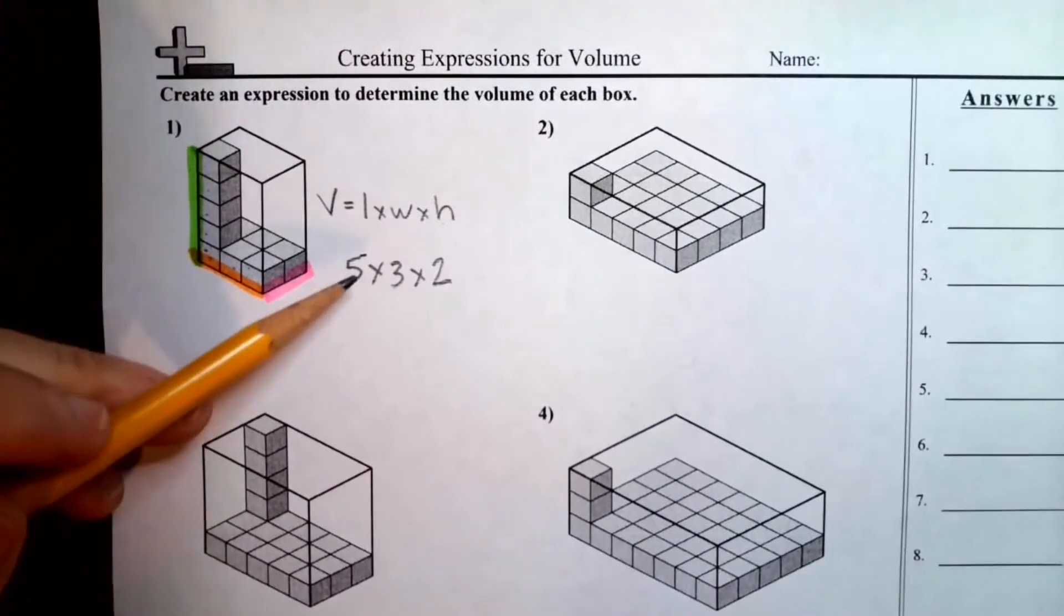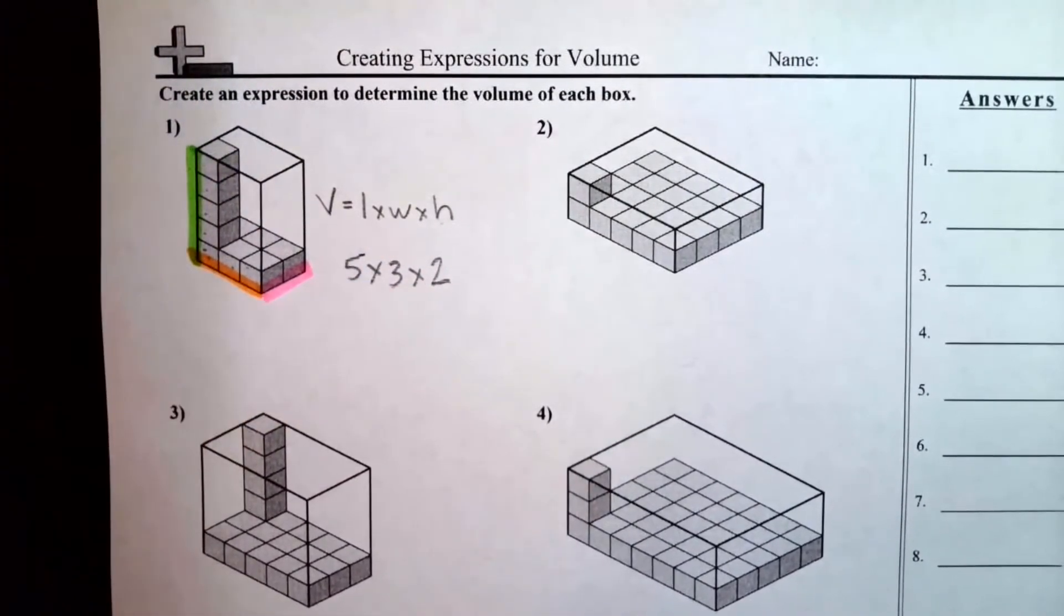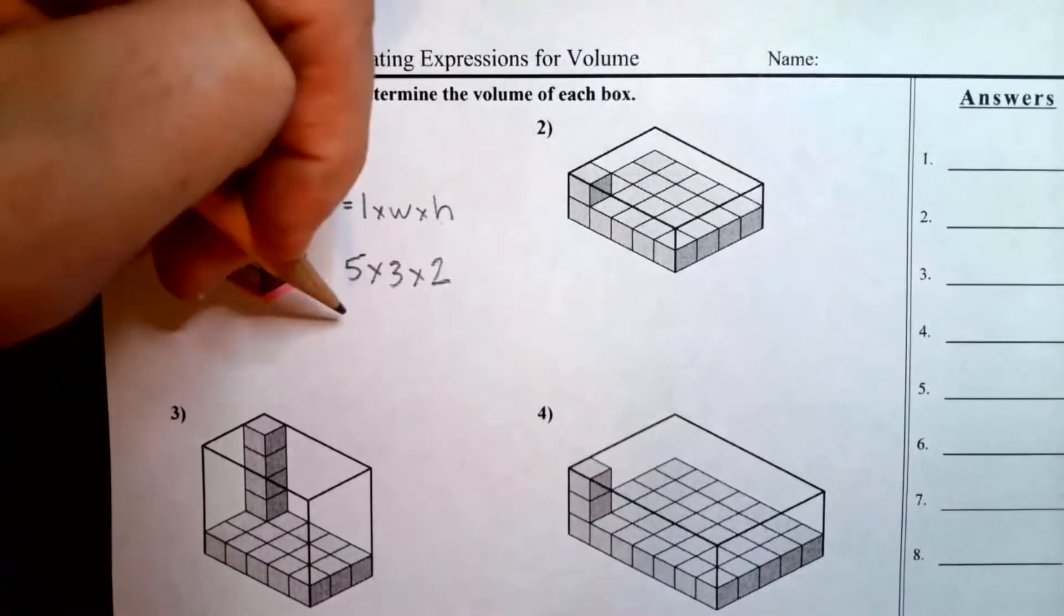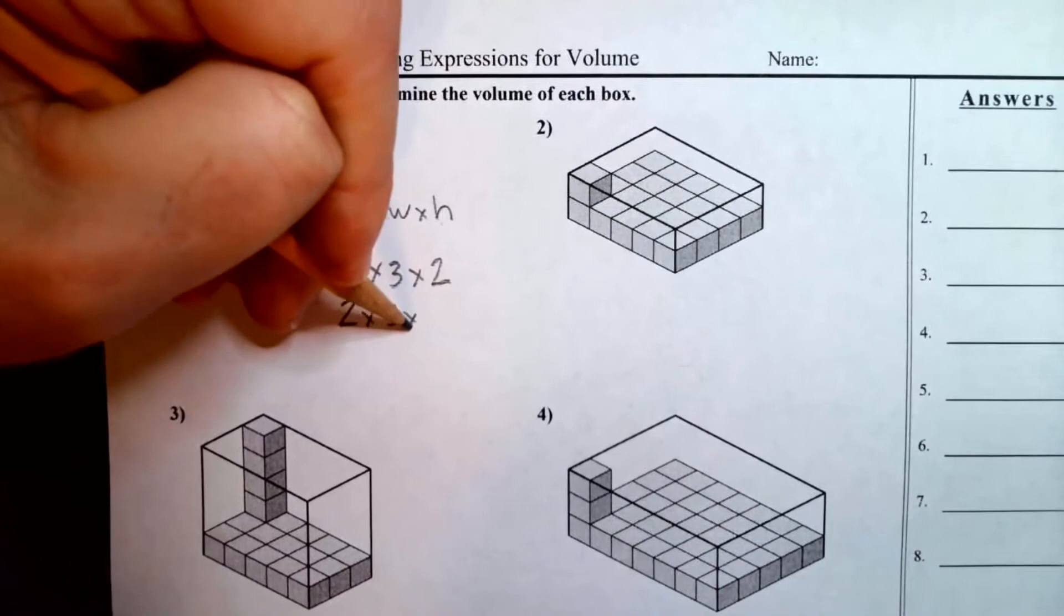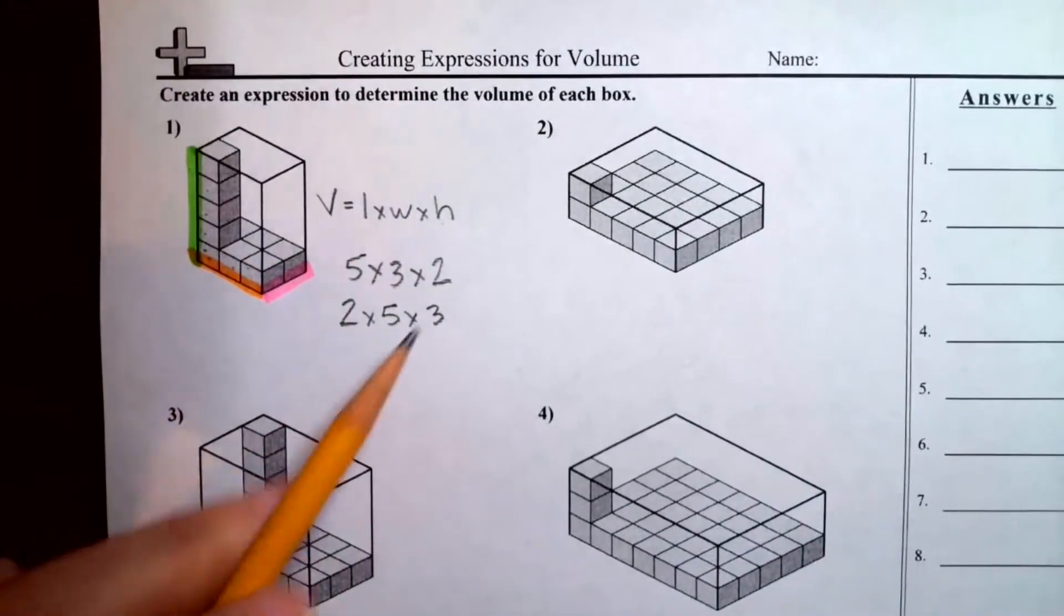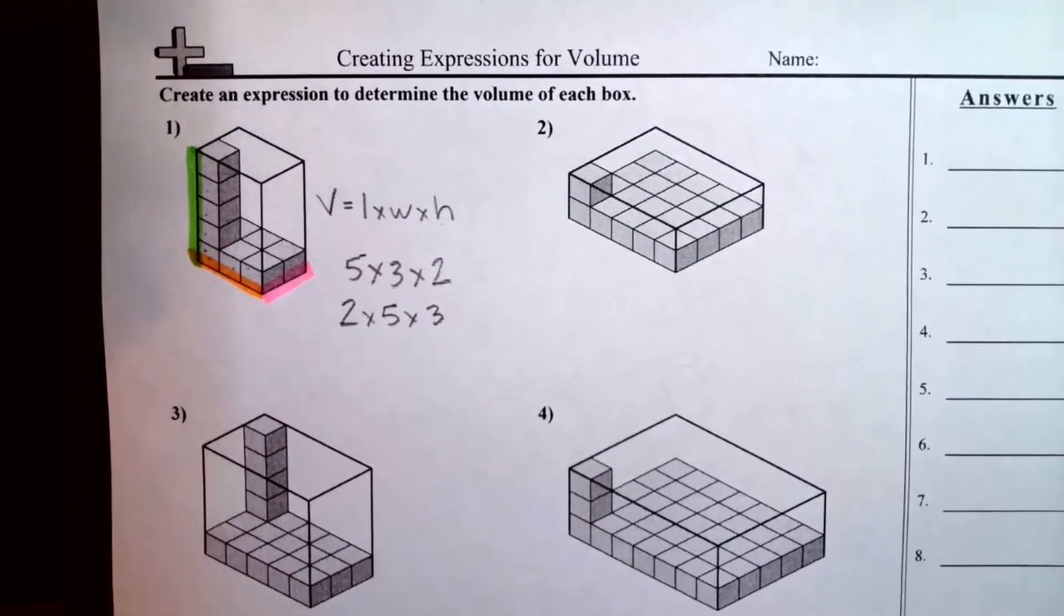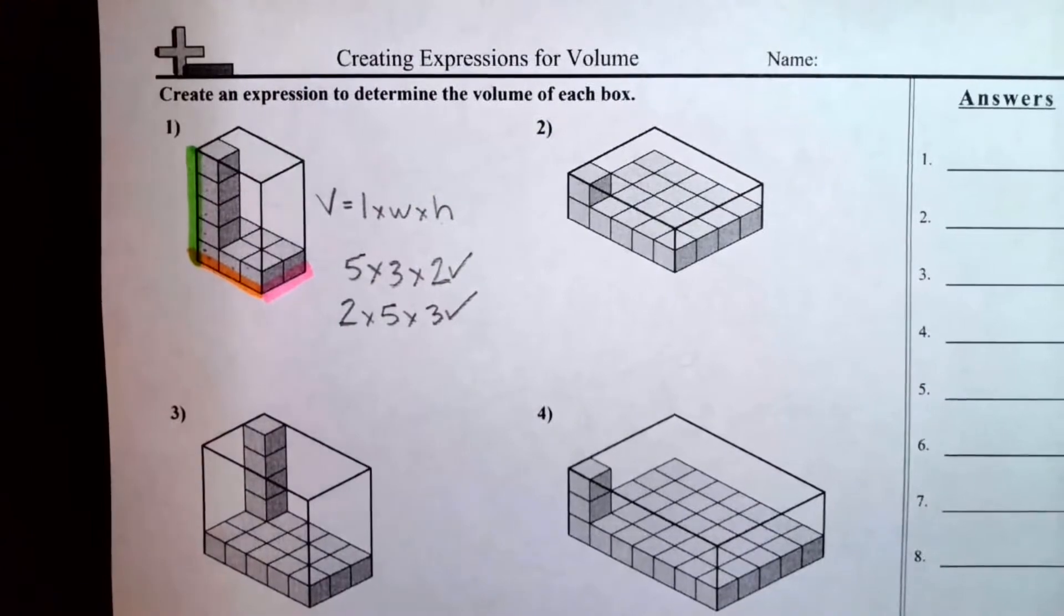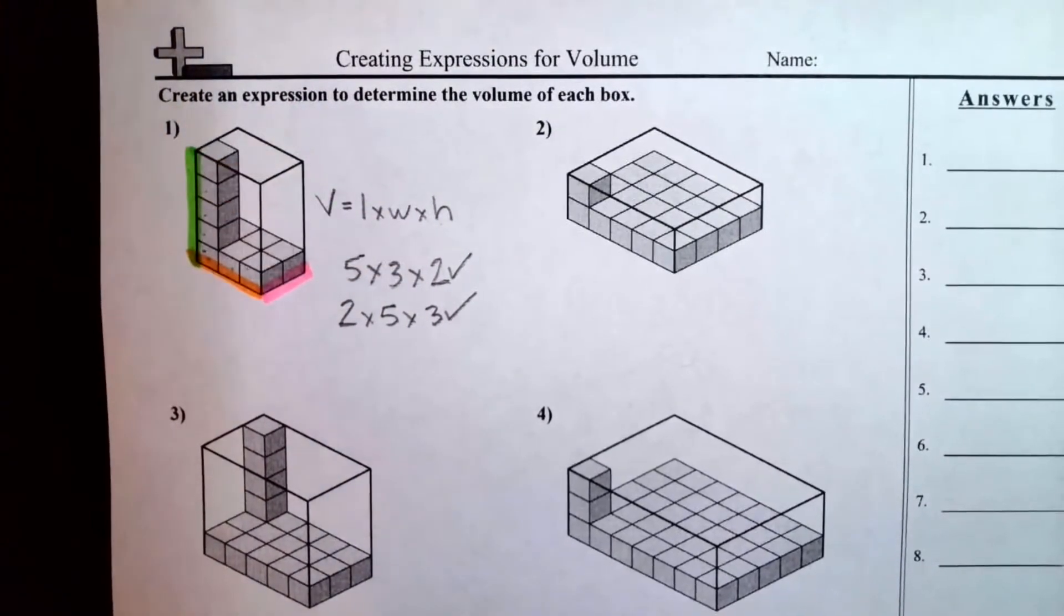Now remember when we're writing expressions that are only multiplication, everything in here is multiplication, you can change the order around and it's not going to affect the answer. It's going to be an equivalent expression. So for example, if you chose to write it like this, that would also be a correct answer. The numbers can be in any order. So that would work. And that would work. And if we were to actually multiply them and figure out the answer, they would both have the same answer.